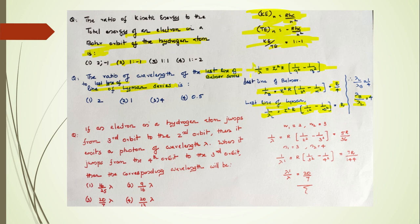This relation is very important: 1 by lambda takes the value as equal to Z square R into 1 by N1 square minus N2 square. Another question: If an electron in a hydrogen atom jumps from the third orbit to the second orbit, then it emits a photon of wavelength lambda. When it jumps from the fourth orbit to the third orbit, then the corresponding wavelength will be. Simple idea. From the third orbit to the second orbit, you get the value as 5R by 36. The second case, fourth orbit to the third orbit, we can find lambda dash, that is 144 by 7R. You just divide lambda dash by lambda, you get the answer.